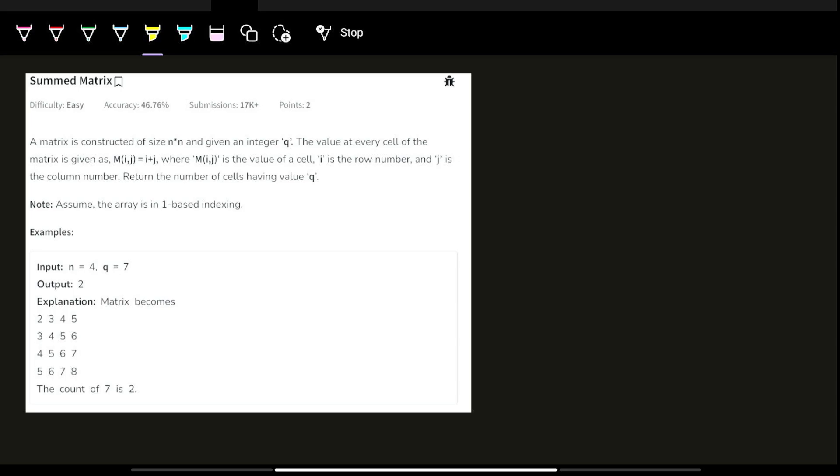So let us now highlight all the points. We have a matrix of size n cross n and we have an integer Q. The value of every cell m[i][j] is nothing but the sum of i and j's indices. We have to find and return the number of cells having the value Q, right?